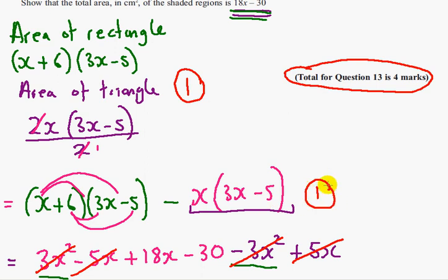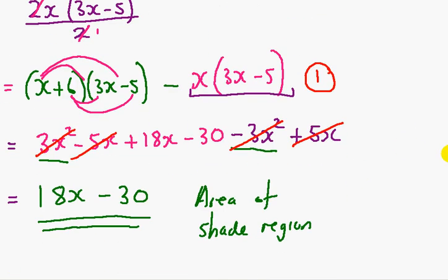And the third mark is for this bit here, for expanding out the brackets and cancelling it down. And the fourth mark is for cancelling it down and leaving yourself with this 18x minus 30, so the final answer. And question 13 is worth 4 marks. And that's it. Thank you very much.